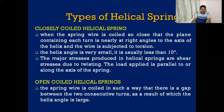The major stresses produced in close coiled helical springs are shear stresses, because the spring is subjected to torsion or twisting which induces shear stress. The load applied is generally along or parallel to the axis of the spring. In open coiled helical springs, the spring wire is coiled such that there is a gap between two consecutive adjacent turns, resulting in a larger helix angle.